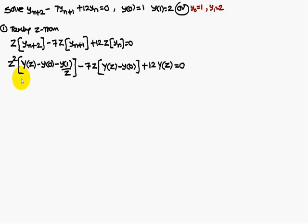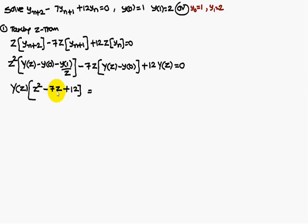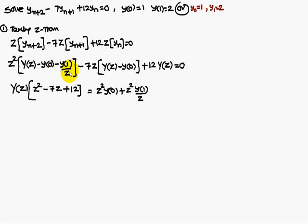In the next step, take capital Y(Z) as common. If you take Y(Z) as common you are left with Z² minus 7Z plus 12 as the coefficient. All remaining terms move to the right-hand side: plus Z²·Y(0), plus Z²·Y(1)/Z, and minus 7Z·Y(0) move to the right-hand side, giving plus Z²·Y(0) plus Z·Y(1) minus 7Z·Y(0).